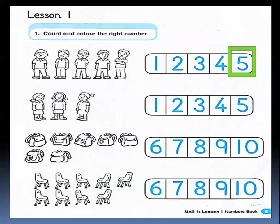Let's turn to the next picture. What are these? These are girls. Let's count these girls: one, two, three. These are three girls. Where is number three? Let's circle number three. This is number three. Very good.